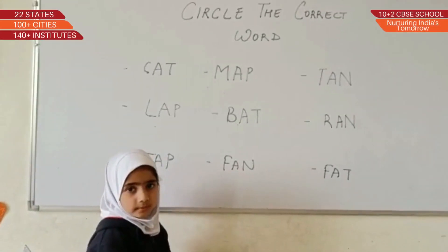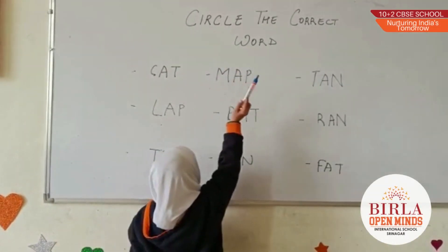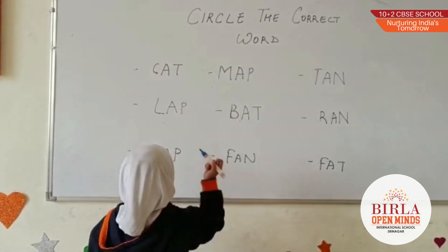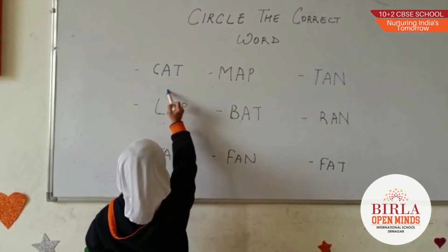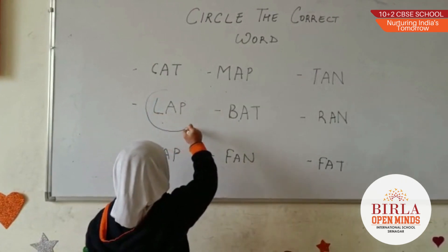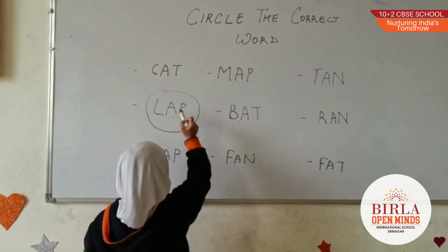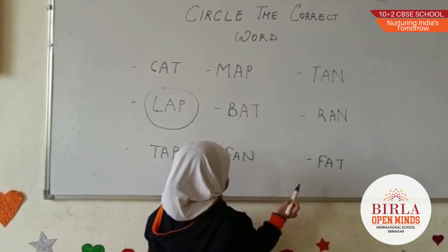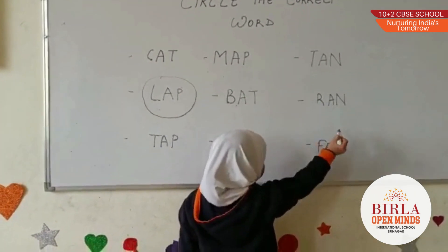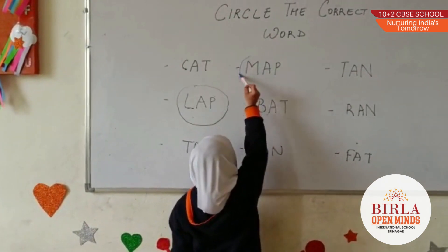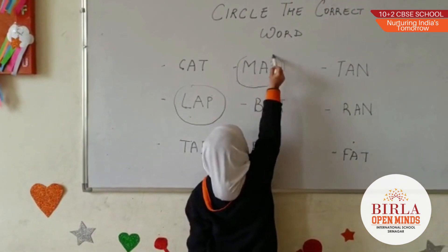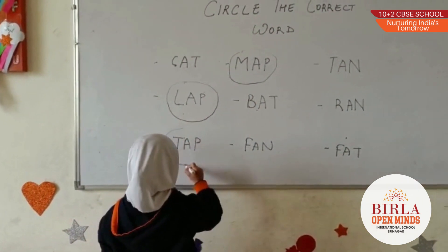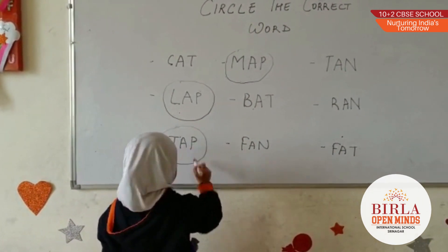Good morning, Haika. What activity are we doing today? Circle dark red words. Okay. Can you circle AP family words? L-A-P-L-E. Very good. Next. L-A-P-L-E. Very good. L-A-P-L-E. Thank you.